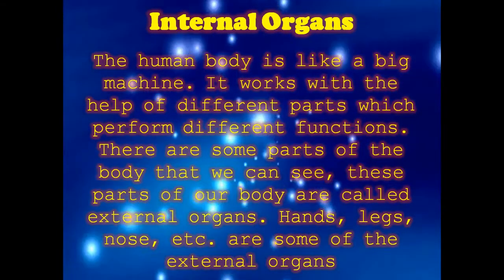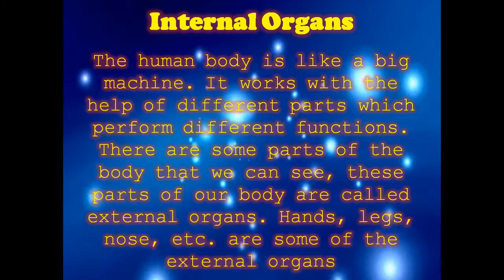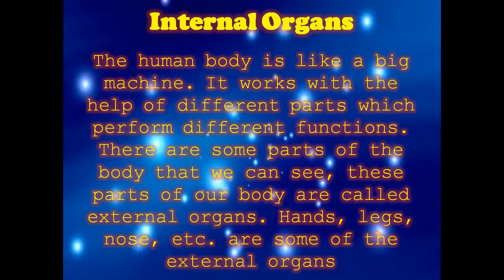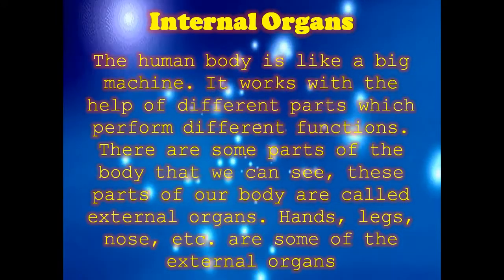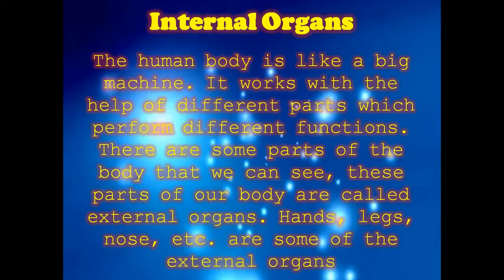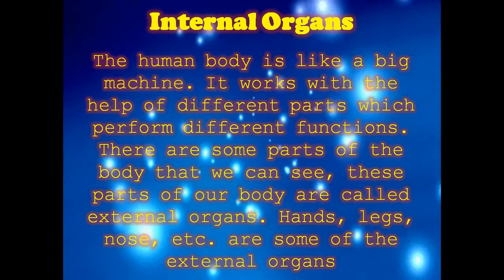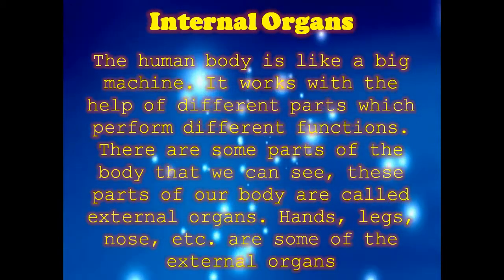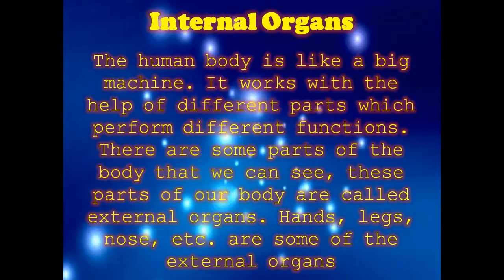Hands, legs, nose, etc. are examples of external organs. When I look at Ashwin, I can see his eyes. When I look at Mukul, I can see his hand and leg. So the things which can be seen are called external organs — for example, hands, legs, nose, etc.